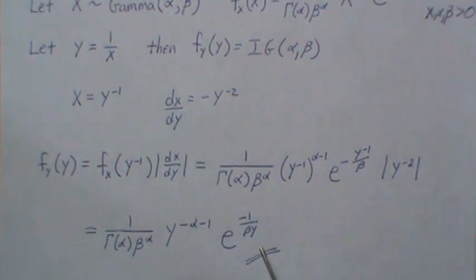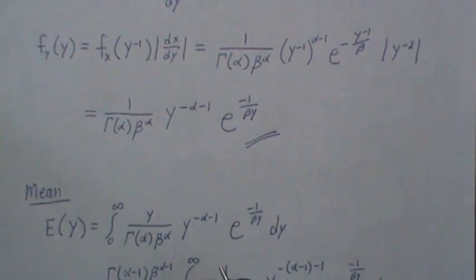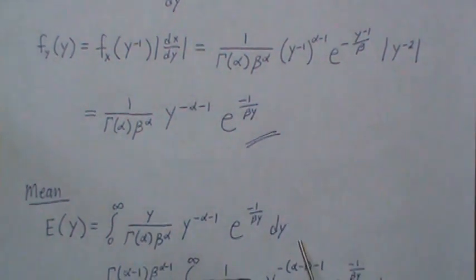That's the density for an inverse gamma. Now let's calculate the mean and the variance. So the mean of y is you plug in y times the density, which is this, integrated over its range of 0 to infinity.